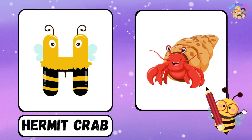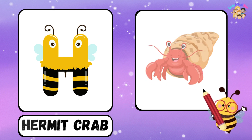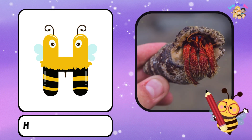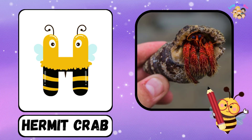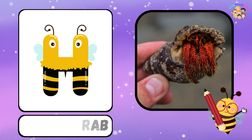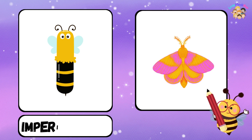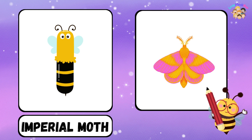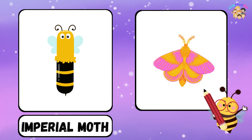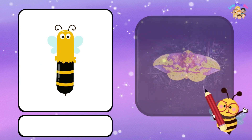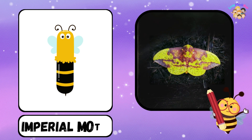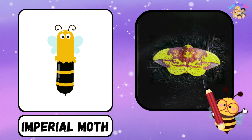H for Hummock Crab. I for Imperial Moth.